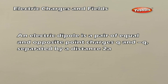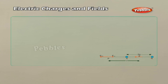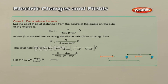Electric Dipole. An electric dipole is a pair of equal and opposite point charges Q and minus Q separated by a distance 2a. The electric field of the dipole at any point in space can be found from Coulomb's law and the superposition principle. The results are simple for two cases: when the point is on the dipole axis, and when it is in the equatorial plane — a plane perpendicular to the dipole axis through its center. The electric field at any general point P is obtained by adding the electric fields E(-Q) and E(+Q) using the parallelogram law of vectors.